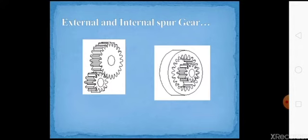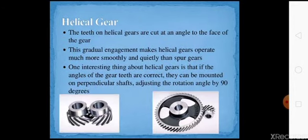For helical gears, the teeth are cut at an angle to the face of the gear. This gradual engagement makes helical gears operate much more smoothly and quietly than spur gears. One interesting thing about helical gears is that if the angles of the gear teeth are correct, they can be mounted on perpendicular shafts, adjusting the rotation angle by 90 degrees.